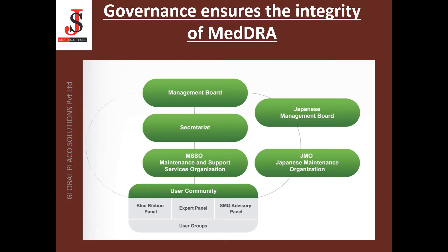This is how the governance structure looks. We have the management board, under which we have the secretariat, under that we have MSSO, and below that we have the user committee, under which we have the Blue Ribbon Panel, expert panel, and SMQ advisory panel, and within that a user group. We also have the Japanese Management Board, under which we have the Japanese Maintenance Organization, the JMO.